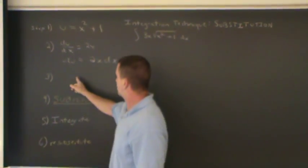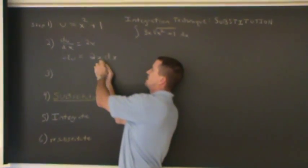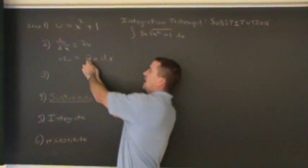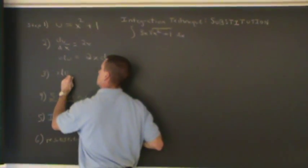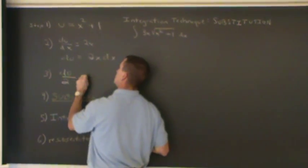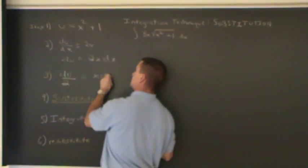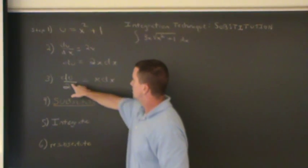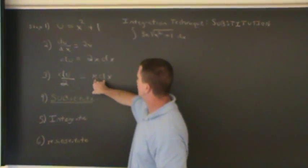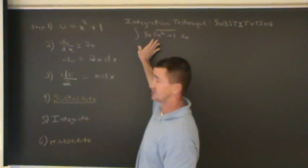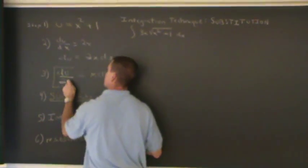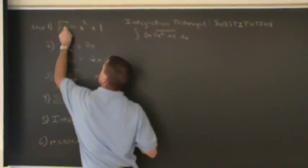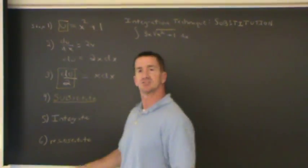In step three, I'm going to isolate this x dx here. If there's any constant over here, I'm going to divide it on both sides. I'm going to get du over 2 equals x dx. Divide that constant so that now I have this x dx isolated so we can perform the substitution. I'm going to put a box around this, box around this, and in step four, now we're going to substitute.